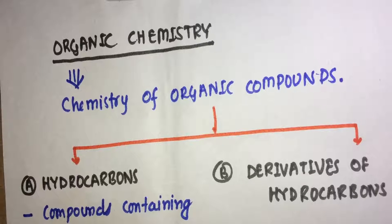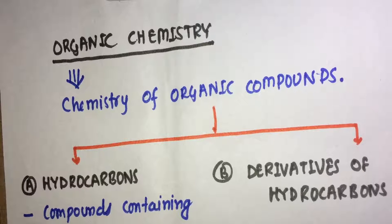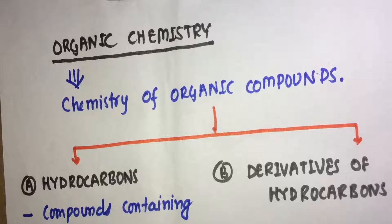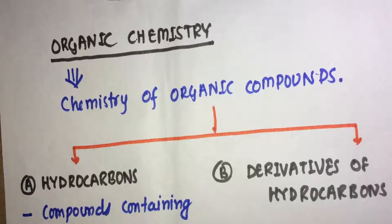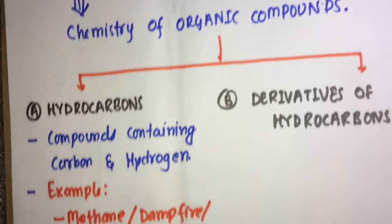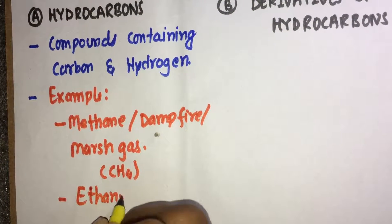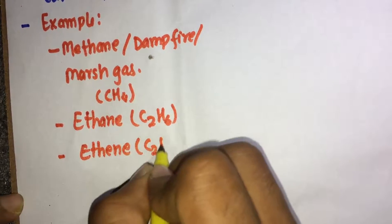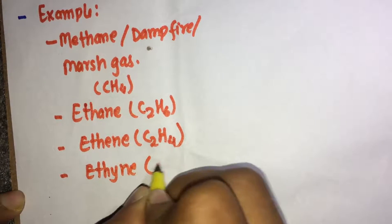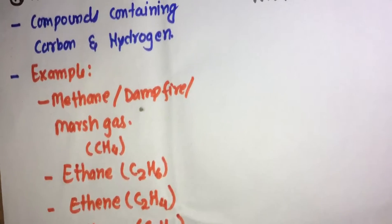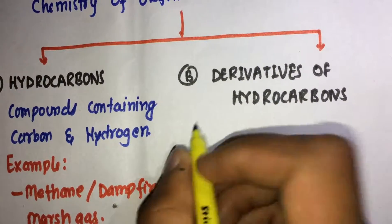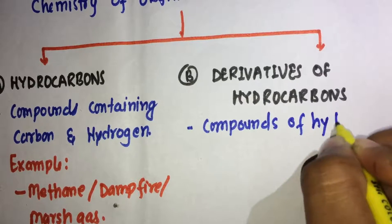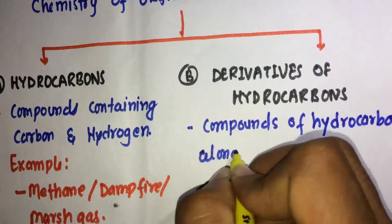Hydrocarbons are compounds containing carbon and hydrogen in their structure. For example, methane or damp fire or marsh gas has a molecular formula of CH4, ethane C2H6, ethene C2H4, ethyne C2H2.